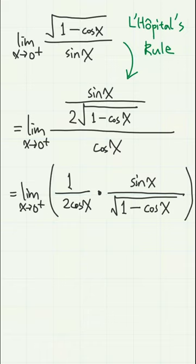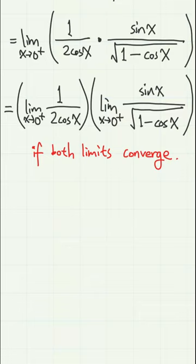We can actually split into two limits if both limits converge. In that case, we have 1 half times the limit of sine x divided by square root of 1 minus cosine x.